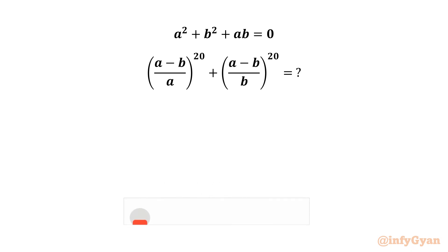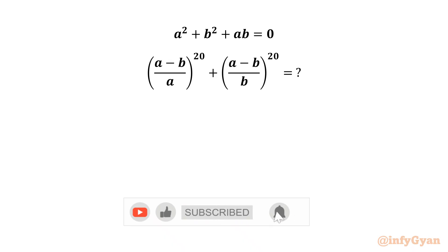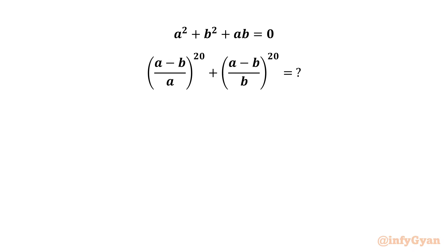Welcome back to Infigyan. Friends, in this video we will be solving one very interesting and tricky question from algebra. We have one known equation: a² + b² + ab = 0. Then we have to evaluate the expression ((a-b)/a)²⁰ + ((a-b)/b)²⁰, where a and b cannot be equal to zero.